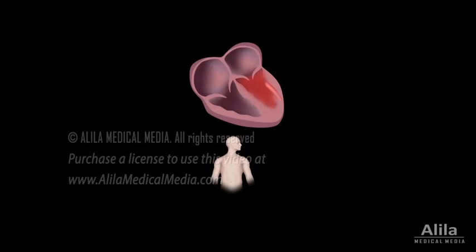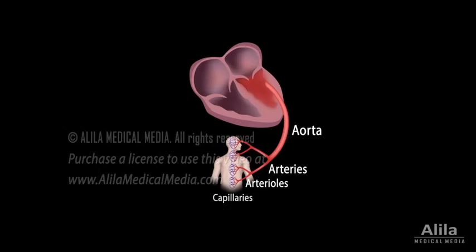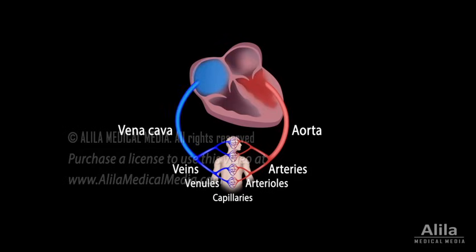The usual route of blood flow is heart to large arteries, smaller arteries, then even smaller arteries called arterioles, then the smallest blood vessels called capillaries, where the exchange of substances takes place. Blood then collects into small veins called venules, then to larger veins, and back to the heart.